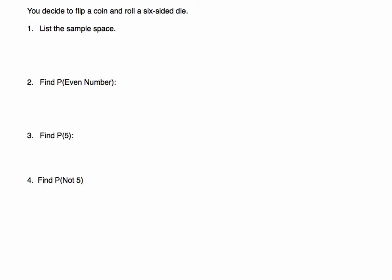Here's another example where we're going to use the sample space approach and practice listing out the sample space. We decide to flip a coin and also roll a six-sided die at the same time — one in each hand. Let's list the sample space, the possible combinations and outcomes. We're not always going to have to do this, but if we're using the sample space approach, we obviously need to.